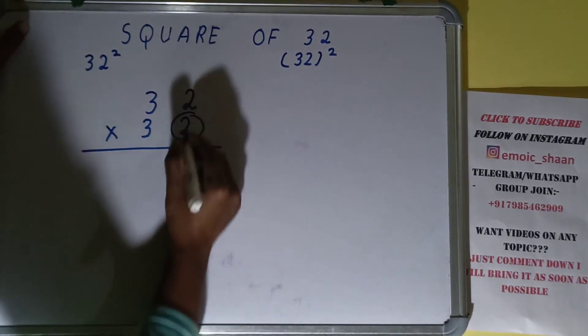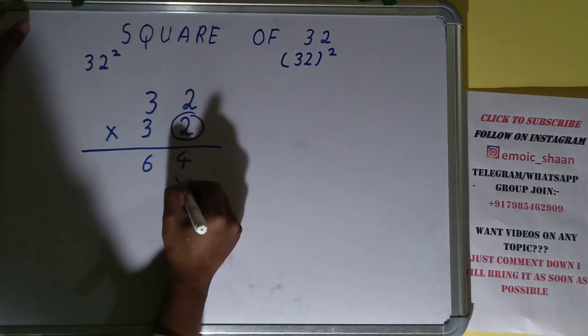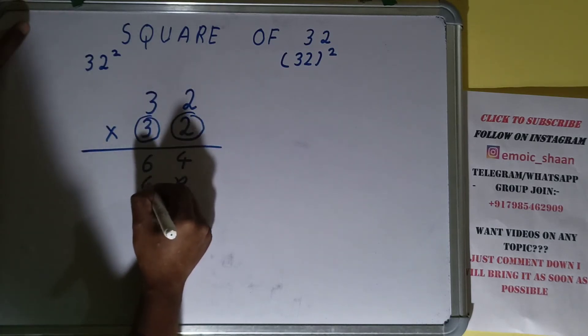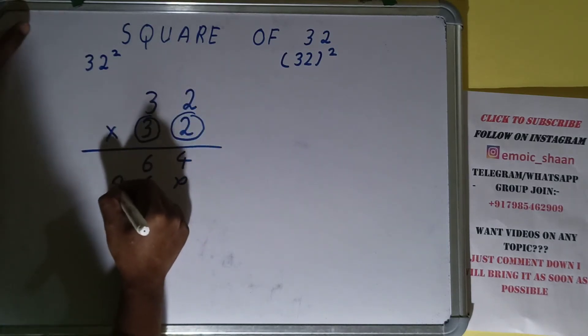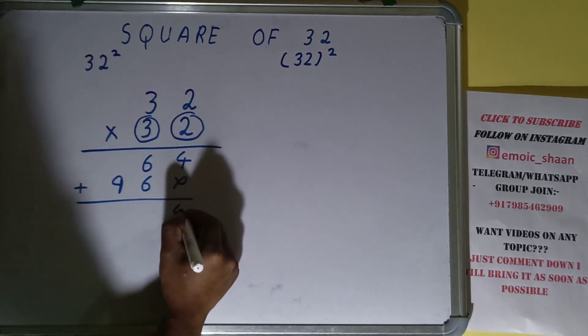With this 2: 2 into 2 is 4, 2 into 3 is 6. Now let's start with this 3: 3 into 2 is 6, 3 into 3 is 9. Just add them all. So this will remain as 4.